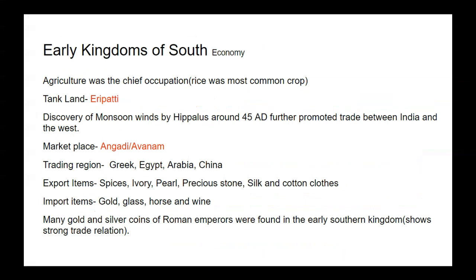Regarding the economy of the southern kingdoms, agriculture was the chief occupation and rice was the most common crop. There was a tank called Aripathi for irrigation or drinking water purposes. Discovery of the monsoon wind by Hippalus around 45 AD further promoted trade between India and the West. The marketplace was known as Angadi or Avnam. They used to trade with Greeks, Egypt, Arabia and China.